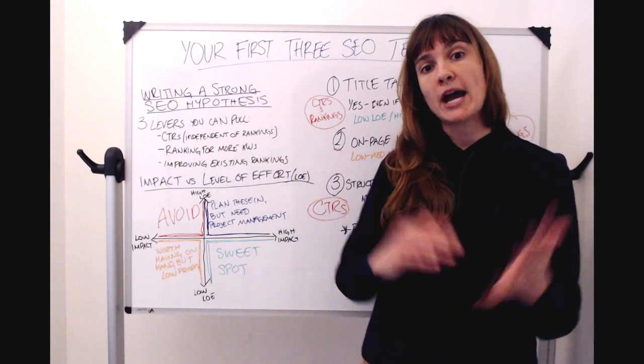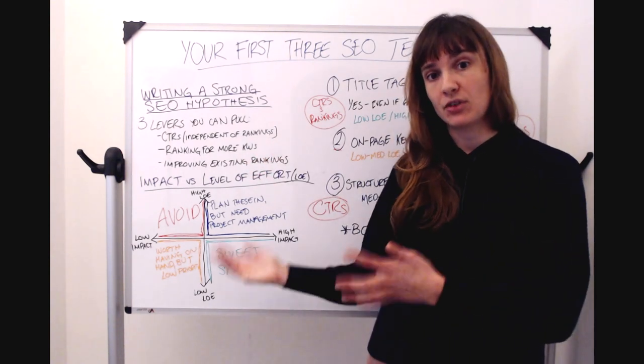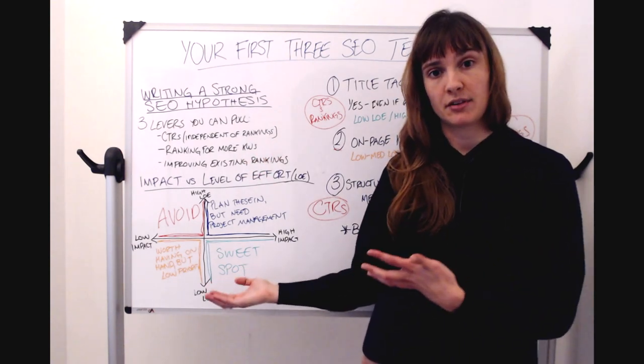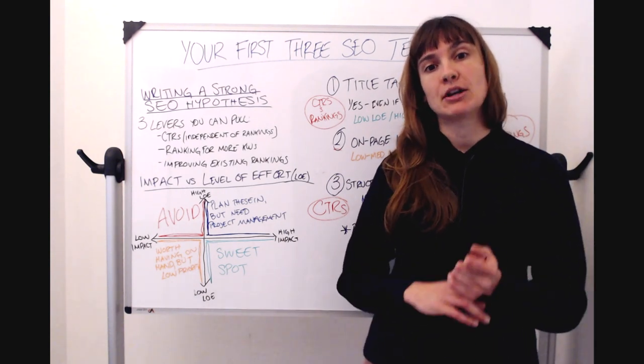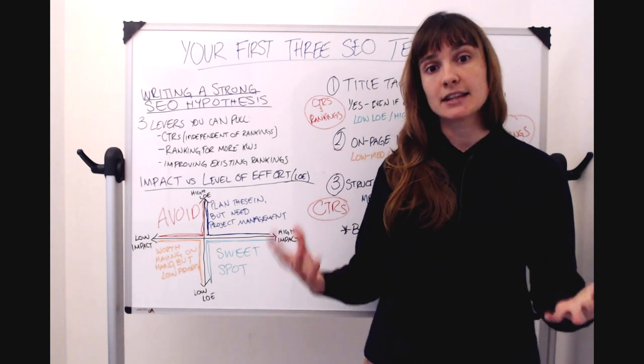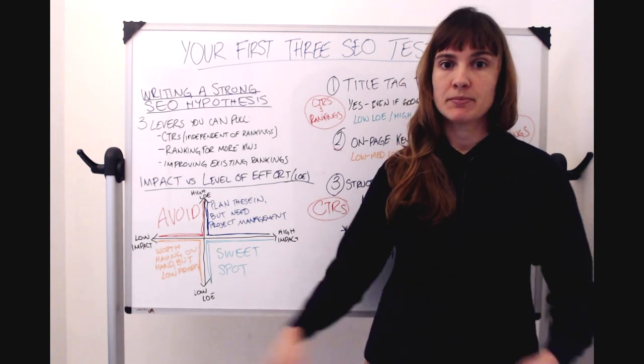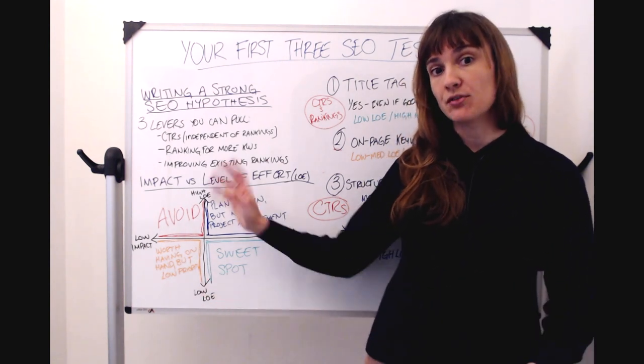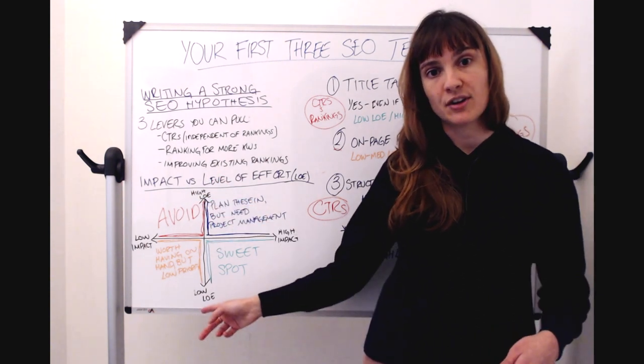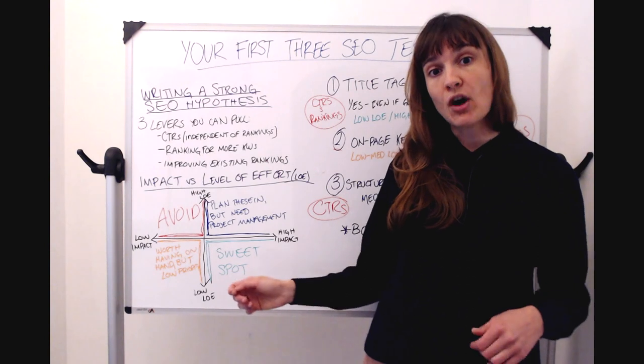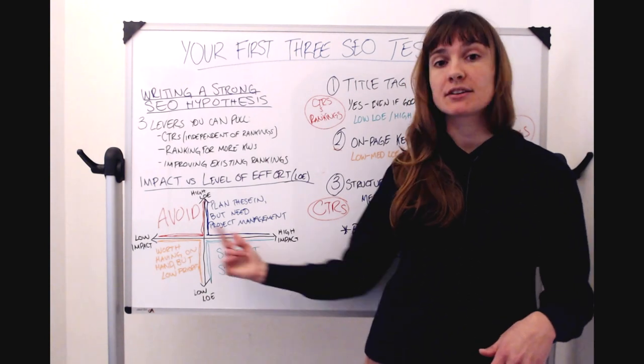So now that you know how to write a strong SEO hypothesis, let's talk about how to prioritize your SEO test ideas. At SearchPilot to do this, we use two core metrics. We look at potential impact and then level of effort or LOE. In this quadrant, I have on the vertical axis, the high level of effort to low level of effort. And on the horizontal axis, I have high impact to low impact.